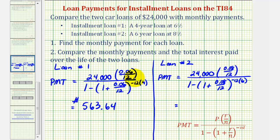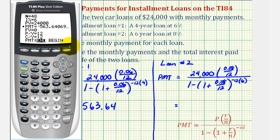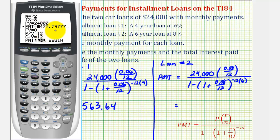I should mention that if you do this by hand and round these values, you'll have a margin of error, so the monthly payment might be off by a few cents. Now for loan two, capital N changes because it's a six-year loan — twelve times six is seventy-two — and the interest rate changes to eight percent. Everything else stays the same. We go down to payment, clear it, and press Alpha Enter. The monthly payment for this loan over six years would be $420.80.